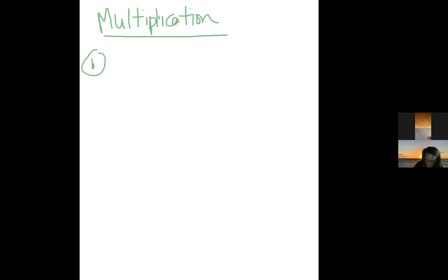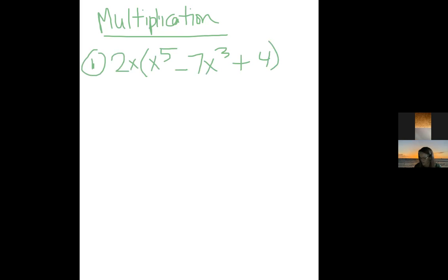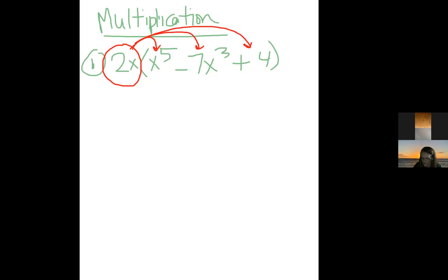Here's a distributing example: 2x(x⁵ − 7x³ + 4). Take 2x and multiply it by everything inside the parentheses. 2x times x⁵ gives 2x⁶ — remember, we add exponents when multiplying. 2x times −7x³ gives −14x⁴. And 2x times 4 gives +8x. That's your basic distribution.